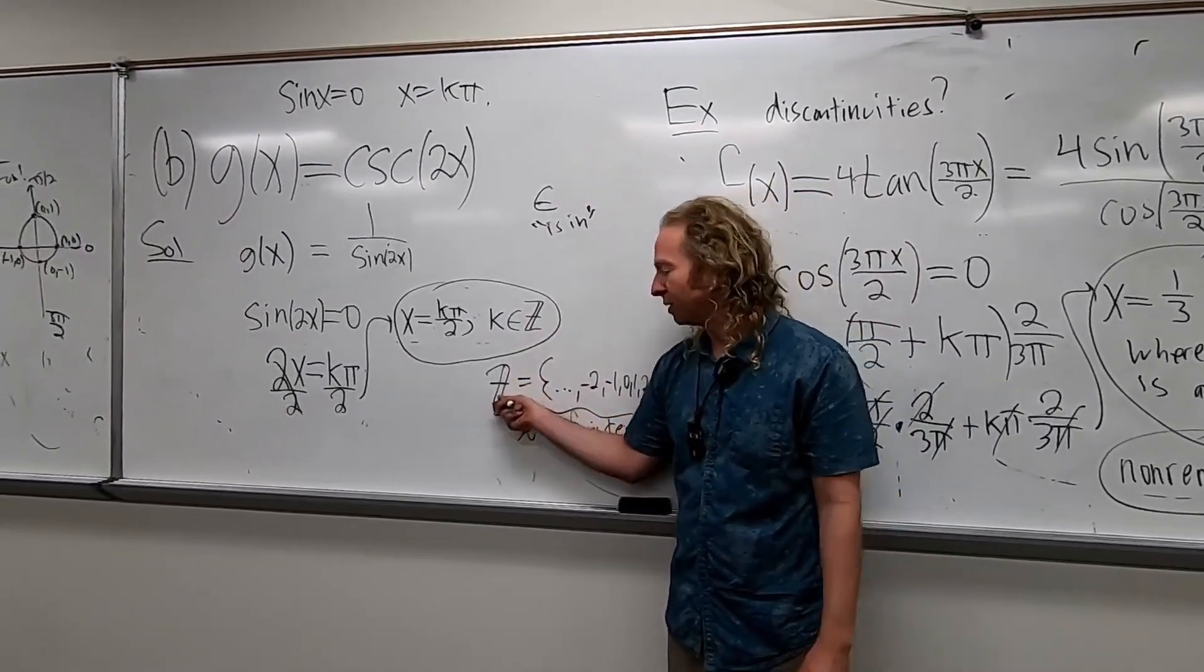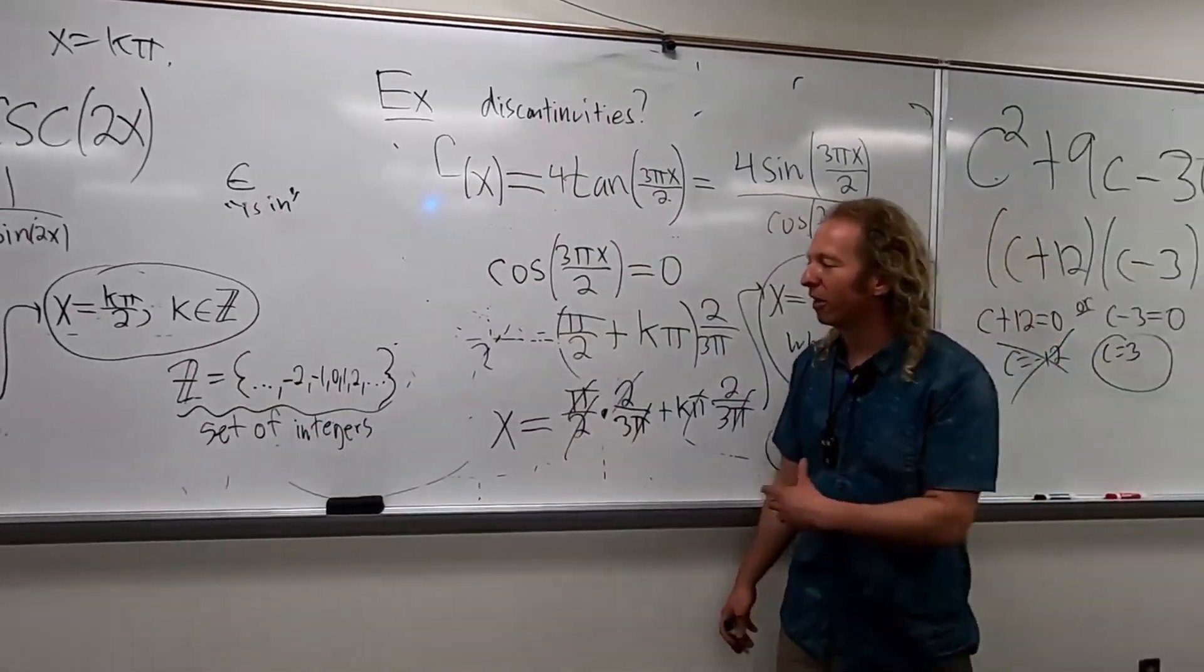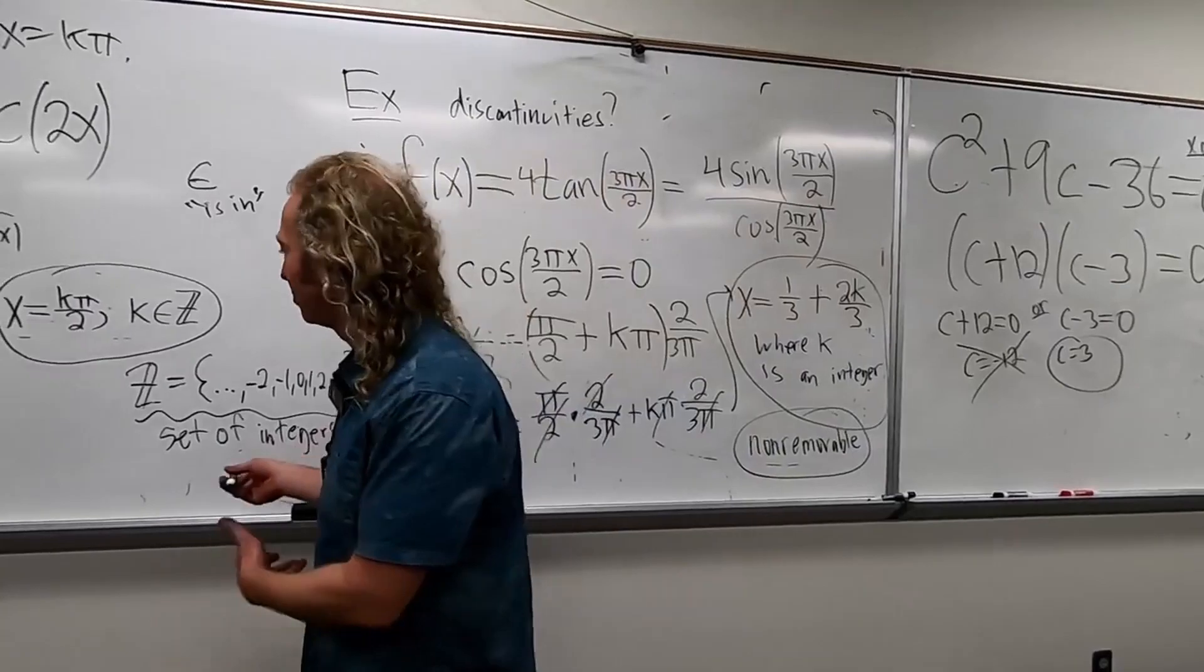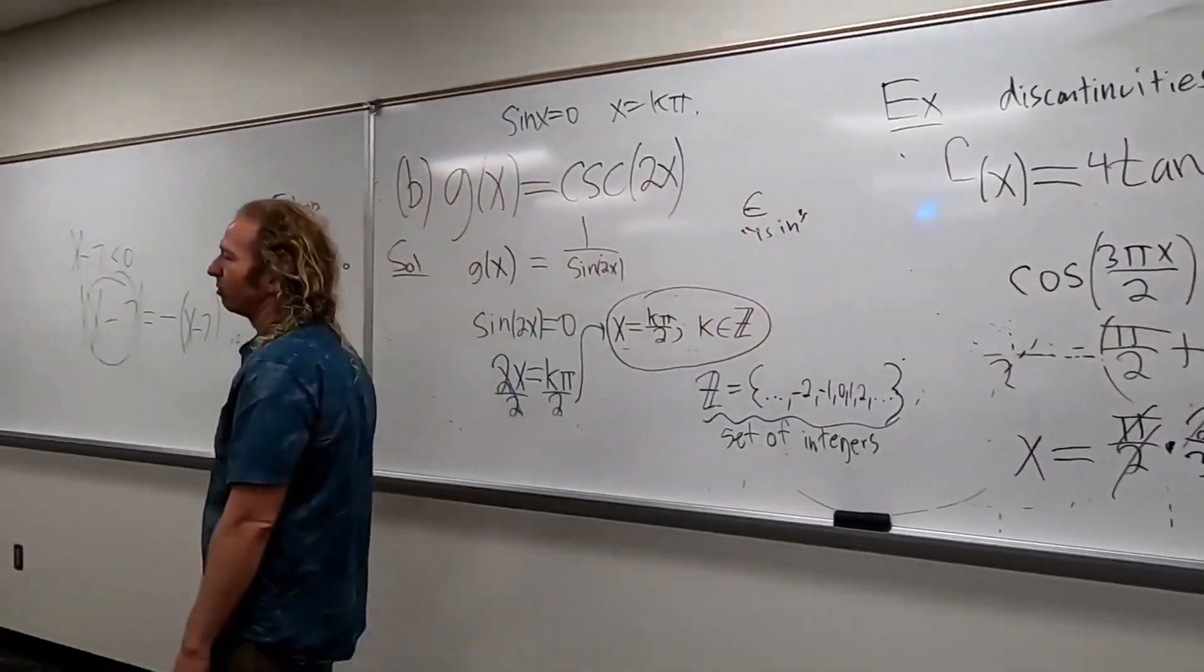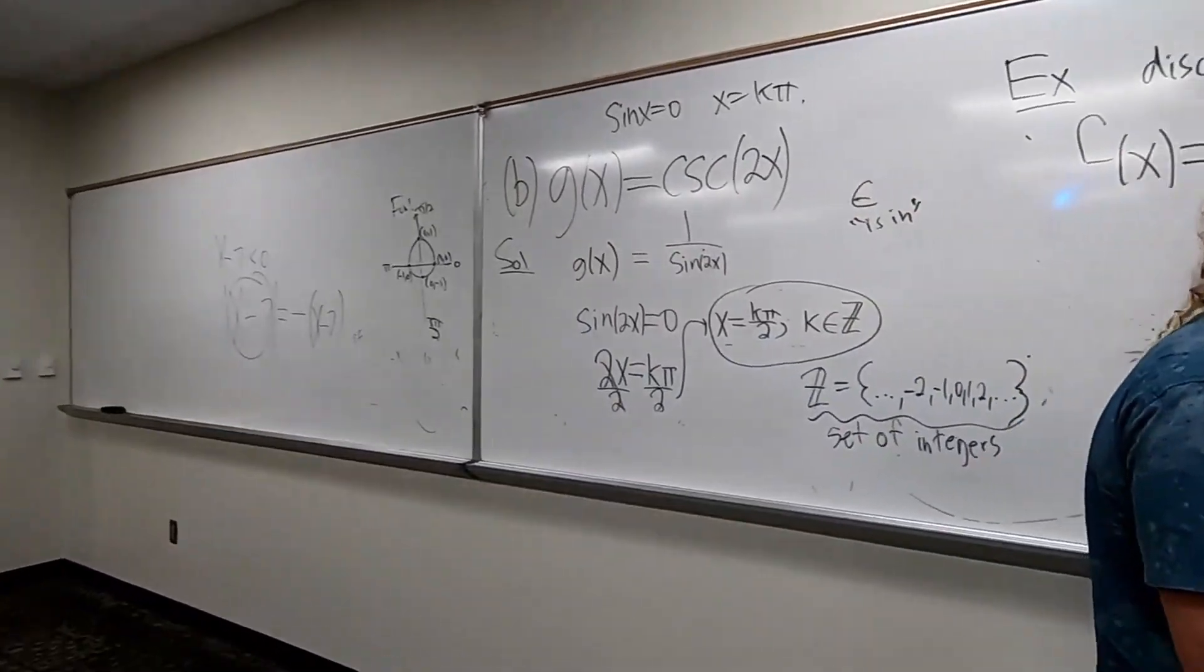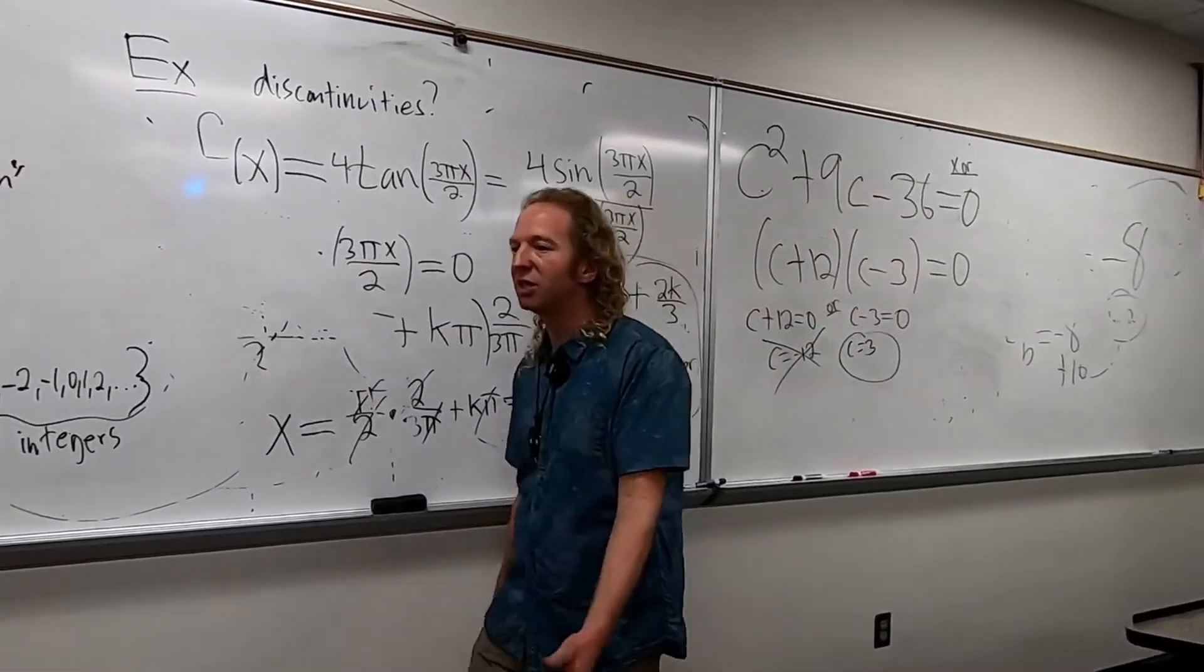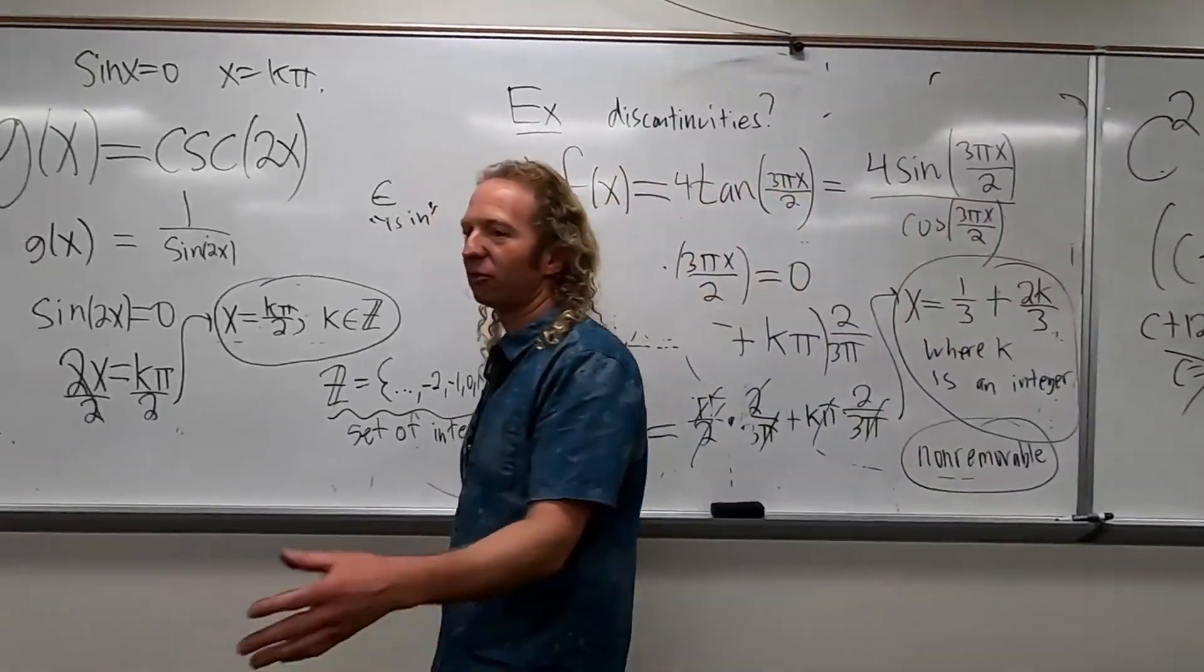And so historically they use z because the Germans created a lot of mathematics. So a lot of the math symbols come from those places. The mathematical languages are French, German, and Russian. Those are the math languages. So if you get a PhD at a good school, you have to learn one of those languages.